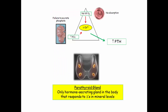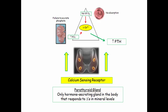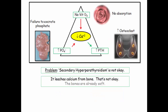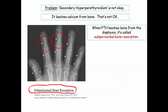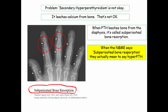The parathyroid gland is the only hormone-secreting gland that responds directly to changes in blood mineral levels. This occurs through the calcium-sensing receptor: high calcium suppresses PTH secretion, whereas low serum calcium stimulates PTH release. Secondary hyperparathyroidism is not okay — it leaches calcium from bone. The bones are already soft. The NBME has special terminology for this: when PTH leaches bone from the diaphysis, it's called subperiosteal bone resorption. When the NBME says subperiosteal bone resorption, they mean hyperparathyroidism.